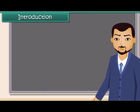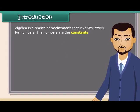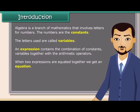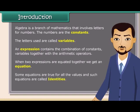Algebra is a branch of mathematics that involves letters for numbers. The numbers are the constants, and the letters used are called variables. An expression contains the combination of constants and variables together with the arithmetic operators. When two expressions are equated together, we get an equation. Some equations are true for all values, and such equations are called identities.